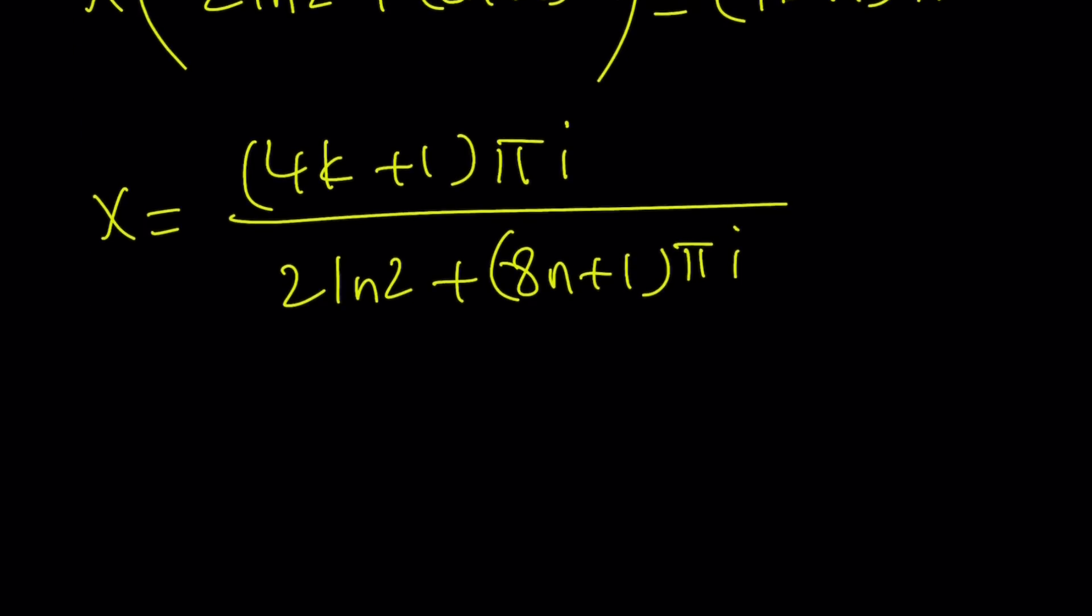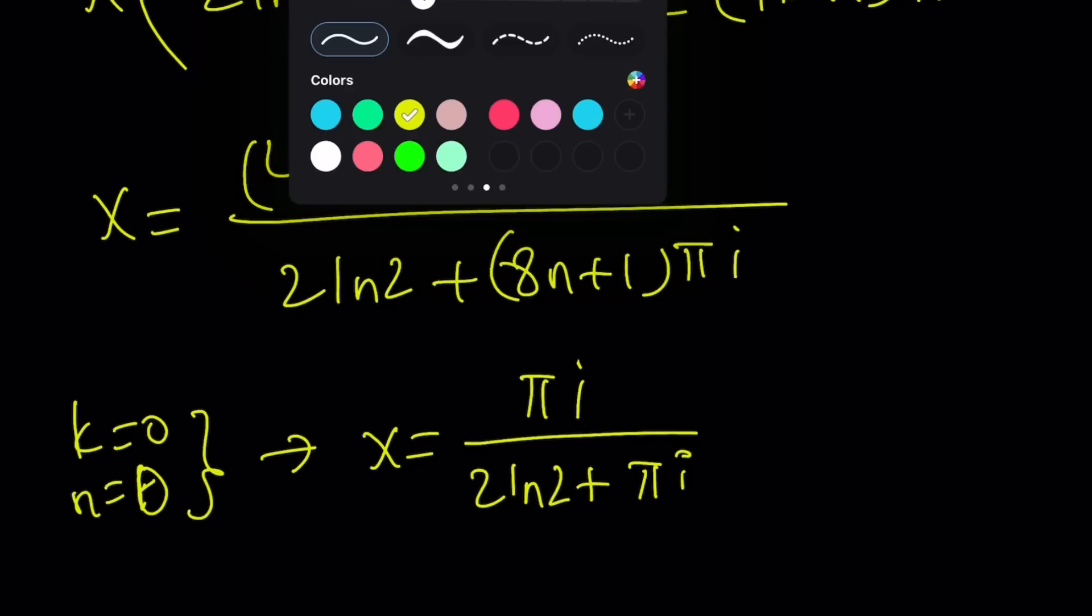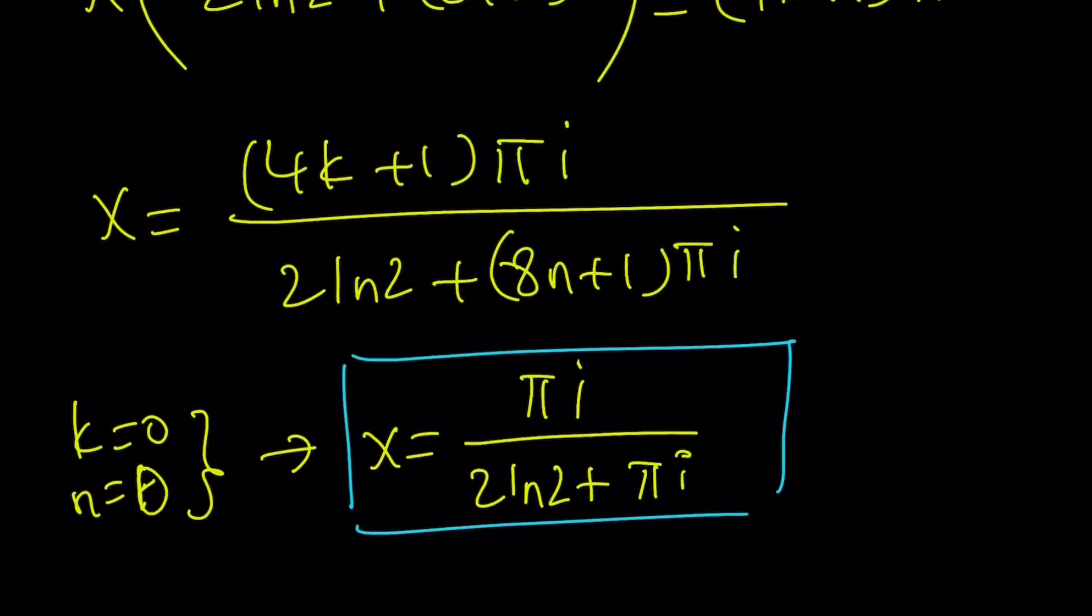For example, what happens if k = 0 and n = 0? From here, we get a specific solution: x = πi/(2ln(2) + πi). So kind of interesting. And you can definitely plug it in to check whether this is going to give you what you're looking for.